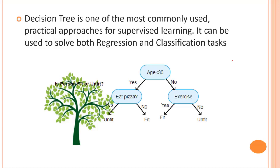Before going into the back-end and the actual algorithm behind the decision tree, let's have a glimpse of the regression tree. It is a tree structure classifier with different entities. Each node is responsible for a decision — for example, here we have a question about whether a person is fit or unfit, represented as a flowchart.